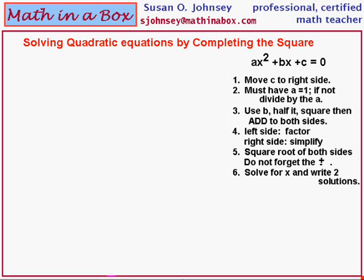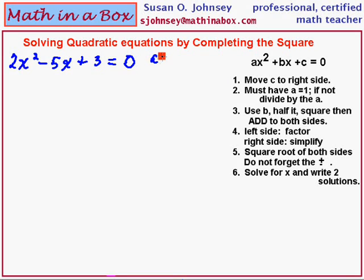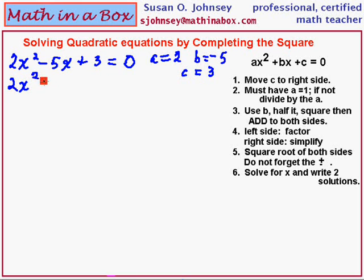Let's look at a second example: 2x squared minus 5x plus 3 equals 0. This quadratic is also written in standard form. For this problem, a is 2, b is negative 5, and c is 3. In our first step, we move the c to the right side. Our c is a positive 3, so we subtract 3 from both sides, giving us 2x squared minus 5x equals negative 3.